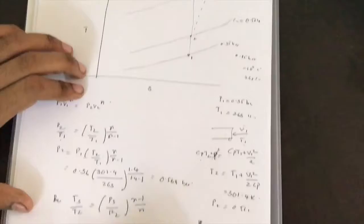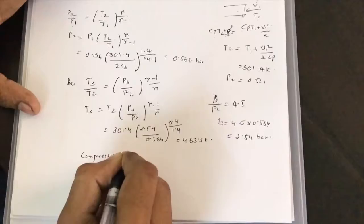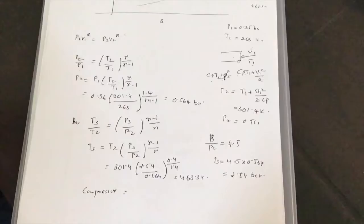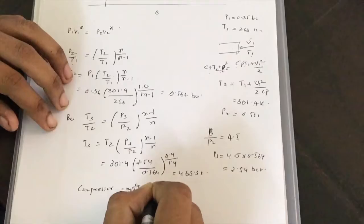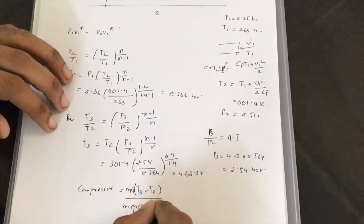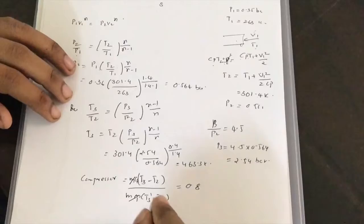The actual process reaches Point 3-dash while the ideal process reaches Point 3. Compressor efficiency = ideal work / actual work = M·Cp·(T3 - T2) / [M·Cp·(T3' - T2)] = 0.8, as given.